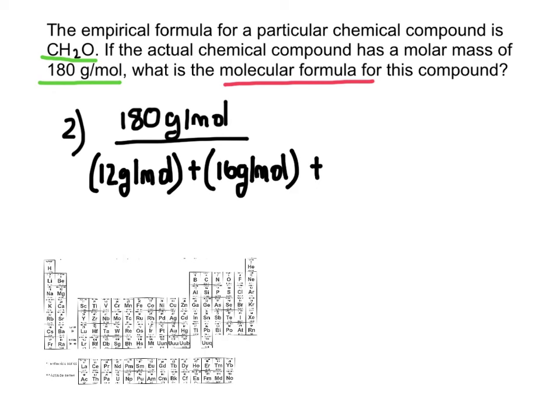And then we have 2 of those hydrogens, which is just 1 gram per mole. And so let's see what we get. So we have 180 grams per mole divided by 30. And we end up with a ratio of 6.